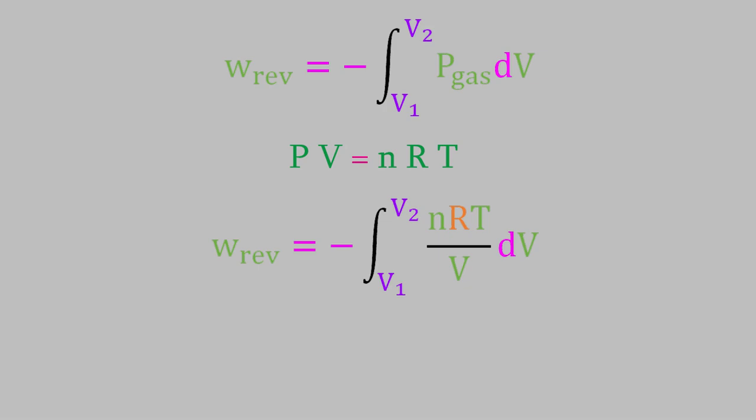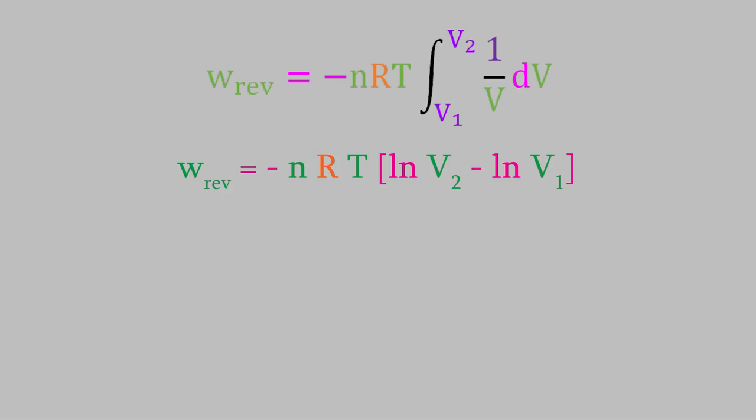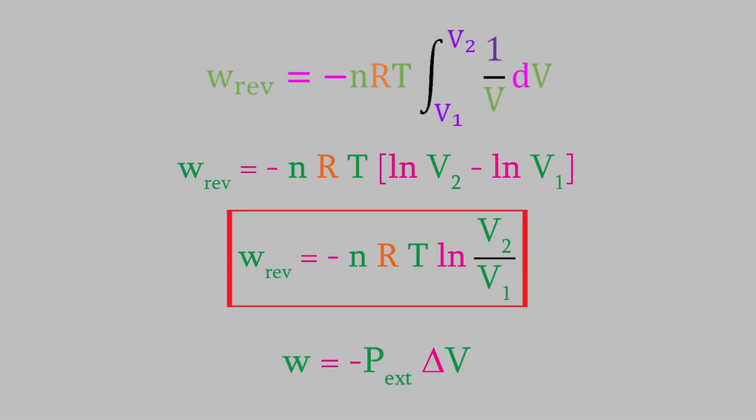nRT are all constants here, so we can pop them out of the integral. That means that our integral is now just the integral of 1 over V dV. If you check a table of integrals, you'll see that this is just equal to the natural logarithm of V. So, the solution to this integral is the natural log of V2 minus the natural log of V1. As you might remember, this is equal to the natural log of V2 over V1. That tells us that the work of a reversible process is equal to negative nRT times the natural log of V2 over V1. So, now we have two useful equations for work, one for a reversible process and one for an irreversible process. Let's use these.